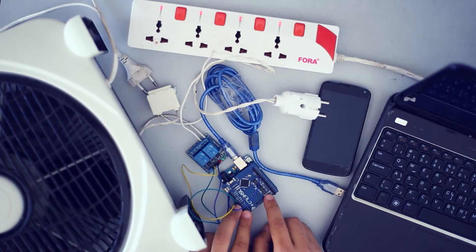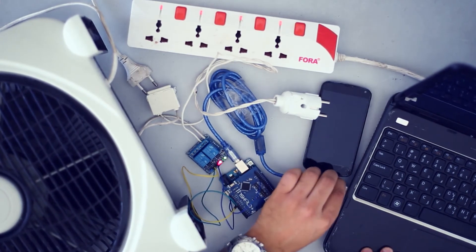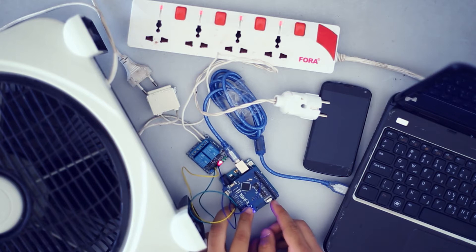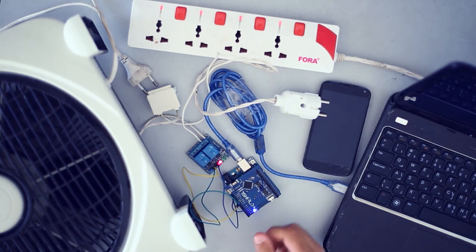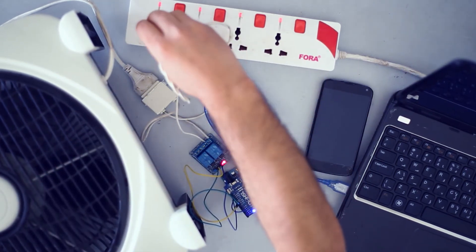Now switch the OneSheet board to the uploading mode, then plug the Arduino to your laptop and upload the sketch. Don't forget to switch the OneSheet to the communication mode, plug in the fan to the plug, and finally plug the plug to the power grid.